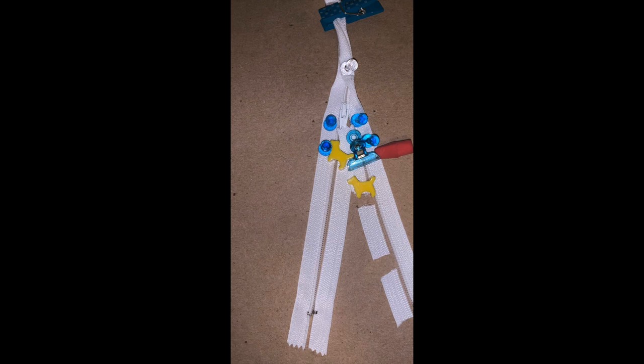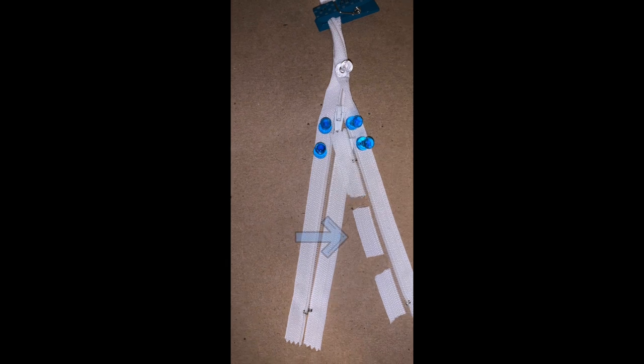This process continues until the helicase is done unwinding. As you can see, the right strand has many short pieces that have just been replicated. These are called Okazaki fragments and occur due to strands being anti-parallel and replicating in the 5' to 3' direction.